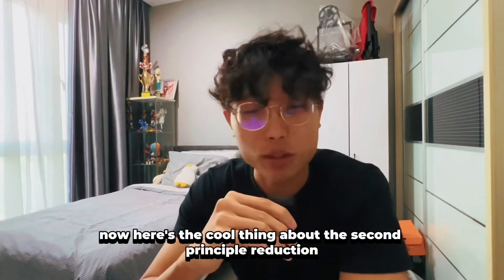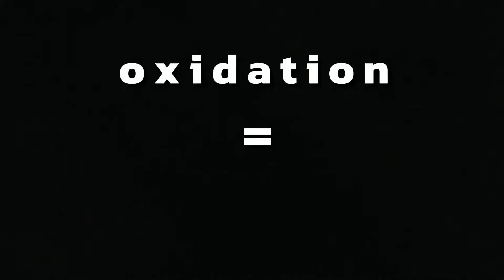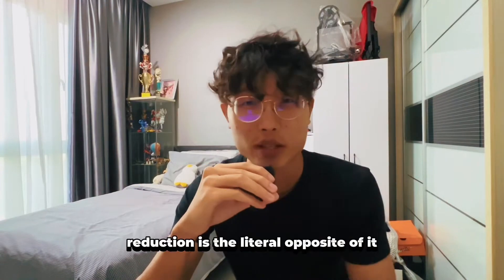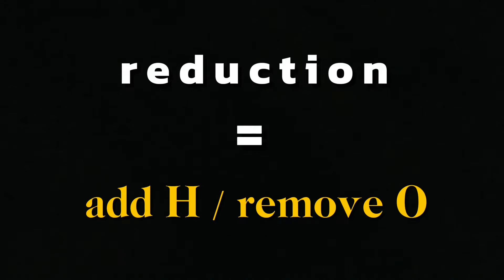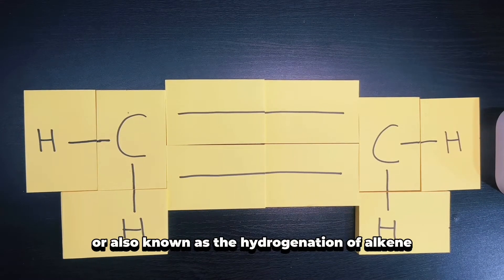Here's the cool thing about the second principle: reduction. If oxidation is the addition of oxygen or removal of hydrogen, reduction is the literal opposite, which means you just have to add hydrogen or remove oxygen. In the reduction of alkene, also known as hydrogenation of alkene, what we do is we break this pi bond and literally add on two hydrogen atoms.